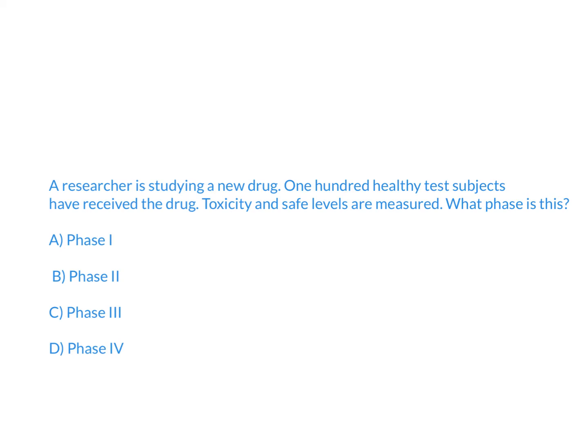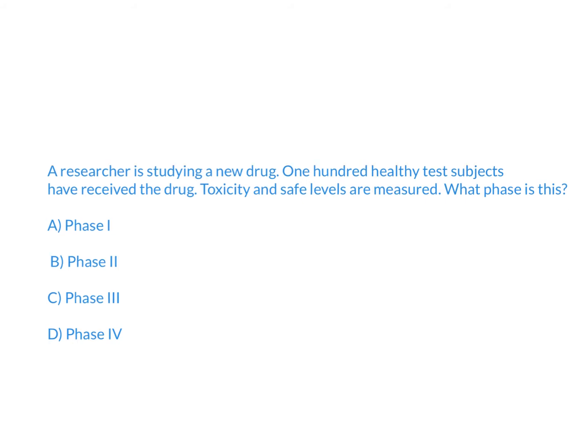A researcher is studying a new drug. 100 healthy test subjects have received the drug and toxicity and safe levels are measured. What phase is this study in? Phase one, phase two, phase three, or phase four? I'll let you answer this question and then I'll explain in five seconds. So the answer is going to be A, phase one.